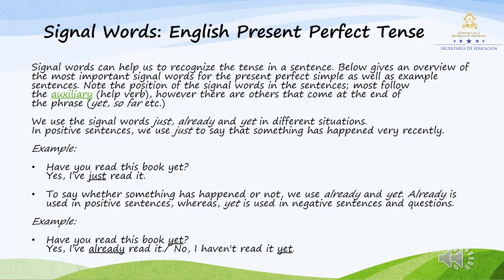Signal words for the English present perfect tense. Signal words can help us to recognize the tense in a sentence. Below is an overview of the most important signal words for the present perfect simple, as well as example sentences. Note the position of the signal words in the sentence — most follow the auxiliary verb. However, there are others that can come at the end of the phrase: yet, so far, exactly. We use the signal words 'just,' 'already,' and 'yet' in different situations. In positive sentences, we use 'just' to say that something has happened very recently. Example: Have you read this book yet? Yes, I've just read it. No, I haven't read it yet.